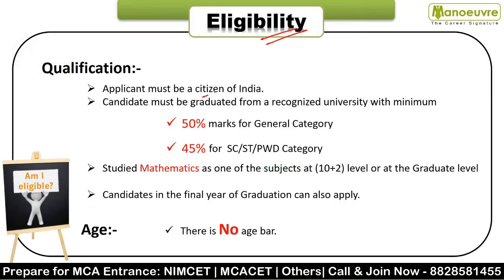Eligibility criteria: the applicant must be a citizen of India and must have graduated from a recognized university with minimum 50 percent marks for general category, and 45 percent for SC, ST, backward classes, PWD, and EWS candidates. The candidate must have studied Mathematics as one of the subjects at 10+2 level or at the graduate level. Final year students can also apply, and there is no age bar.